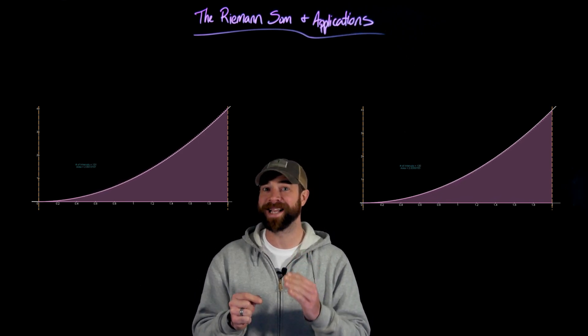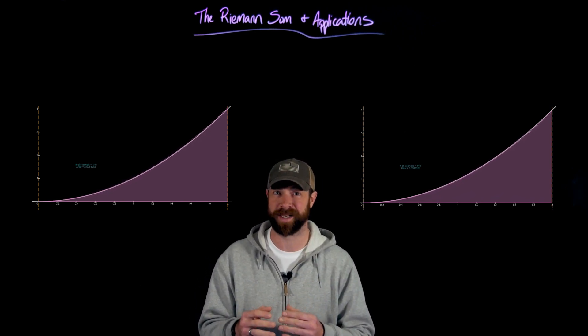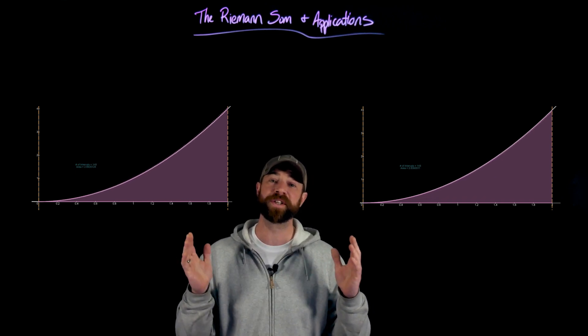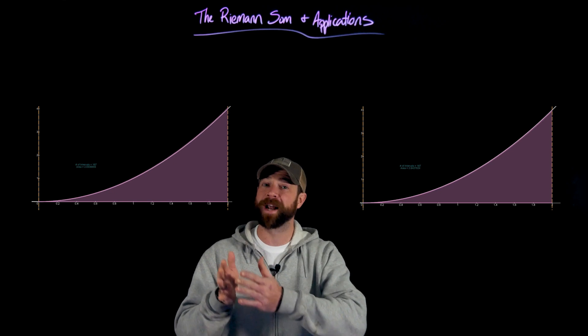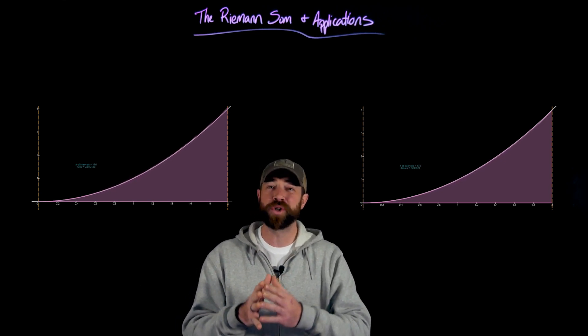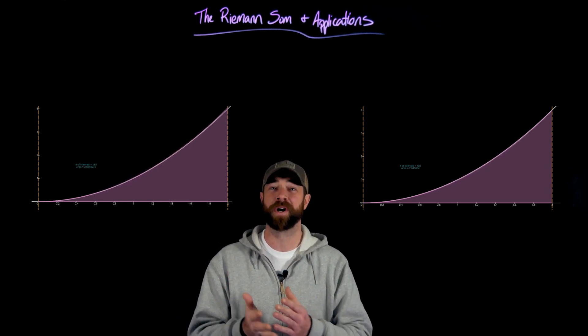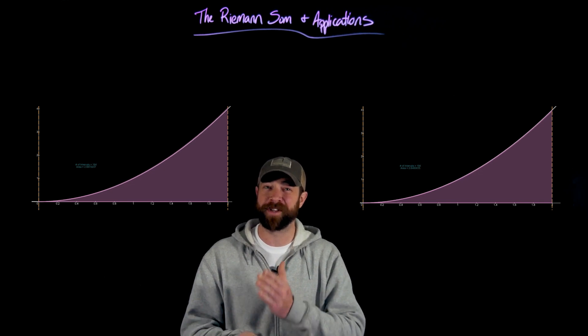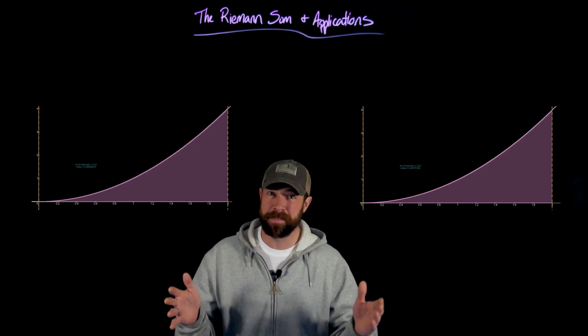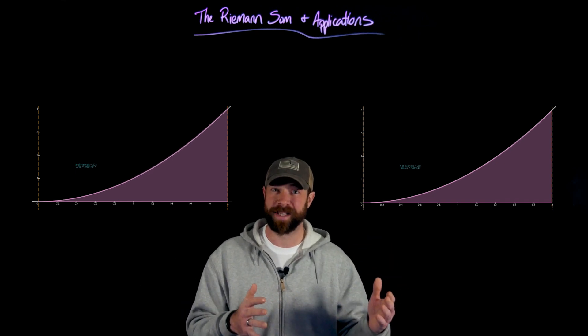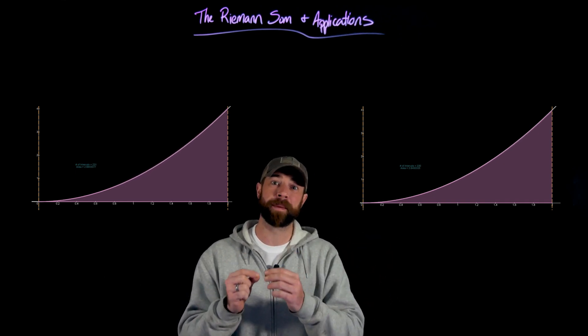What we're going to define right now is called the Riemann sum. And the Riemann sum is going to use this same technique, but it's going to have the flexibility to say, for every ith interval, choose any point on that interval. Because we're going to end up choosing enough intervals that it doesn't actually matter which point, the endpoint, the midpoint, or the beginning of the interval, that we choose for the point representing that interval.